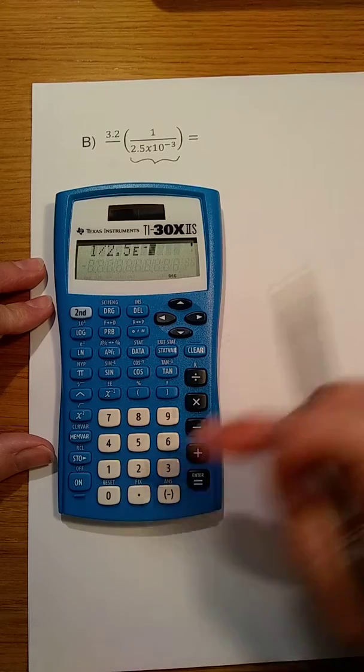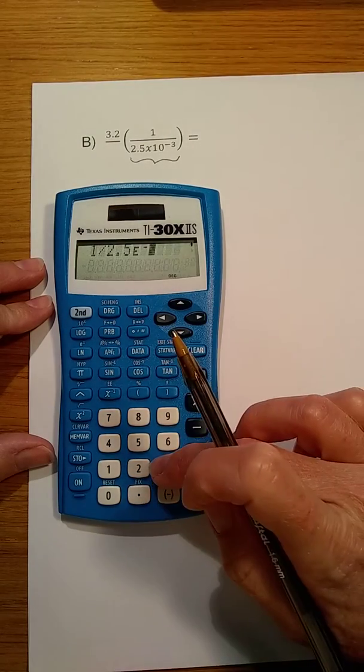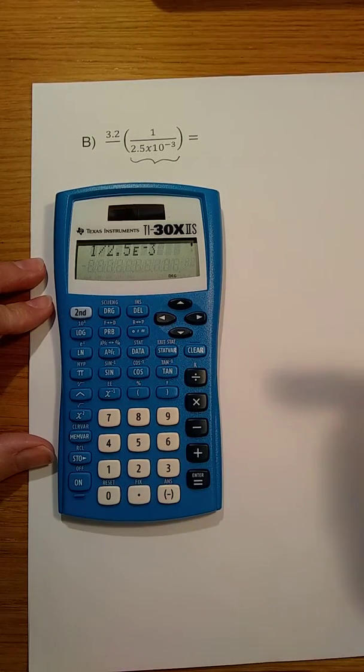Since it's negative, we'll use the negative sign and then the number 3 to enter that. Hitting equals gives us the value to that part of the calculation, which is 400.